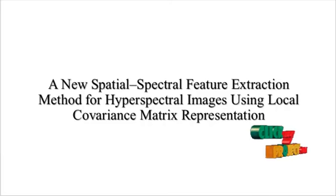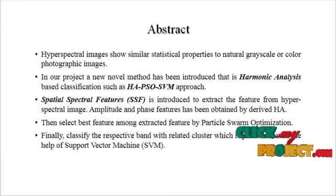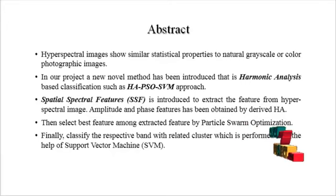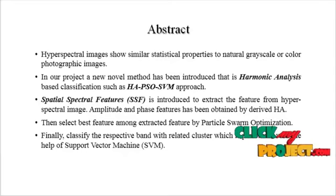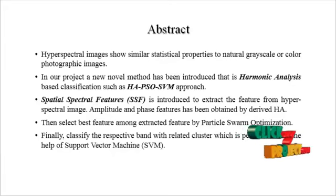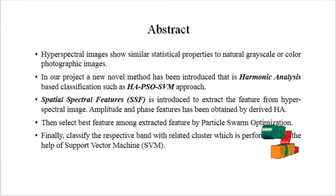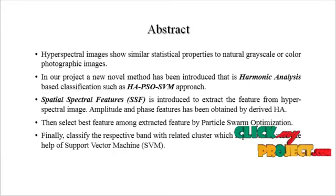Now we are going to discuss the abstract. Hyperspectral images show similar statistical properties to natural grayscale or color photographic images. A novel method has been introduced: harmonic analysis based classification using high GA harmonic analysis, PSO (Particle Swarm Optimization), and the SVM (Support Vector Machine) approach.